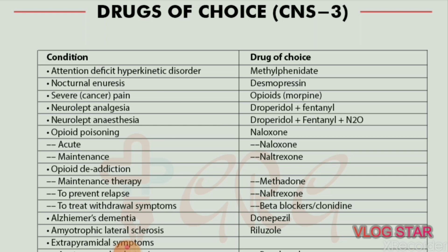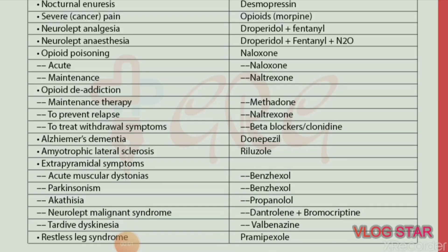Acute opioid poisoning — drug of choice is naloxone. For maintenance, opioid poisoning — drug of choice is naltrexone. Next is opioid de-addiction — for maintenance therapy, drug of choice is methadone. To prevent relapse — drug of choice is naltrexone.